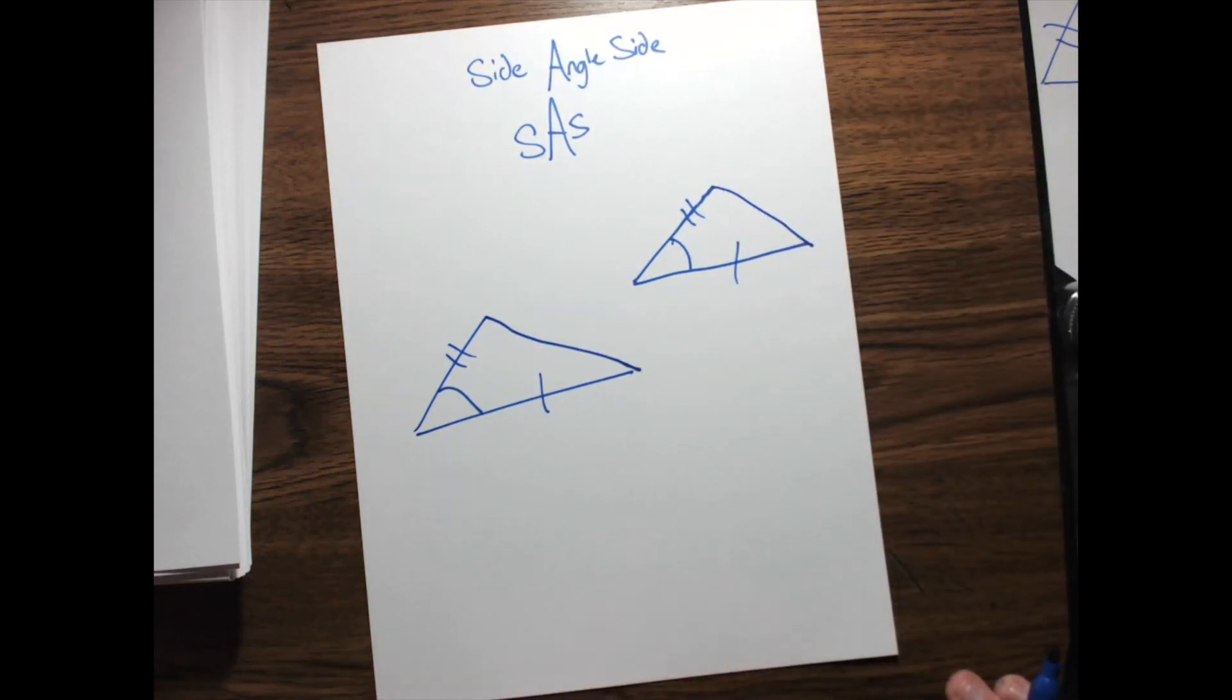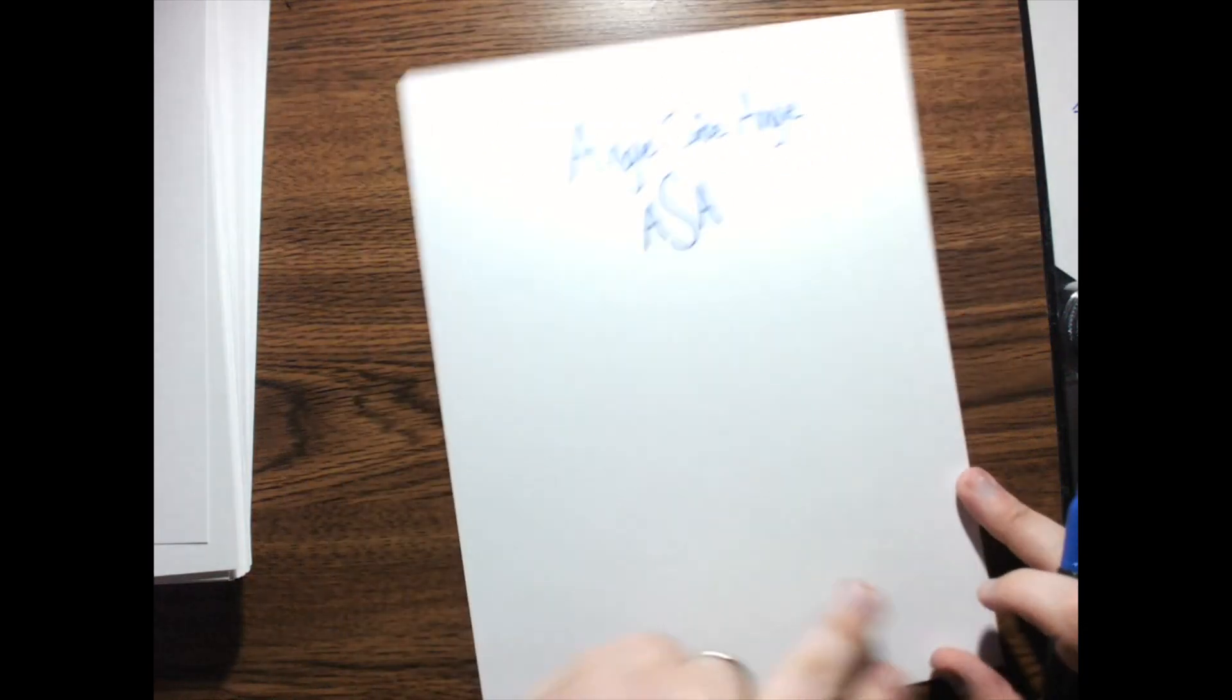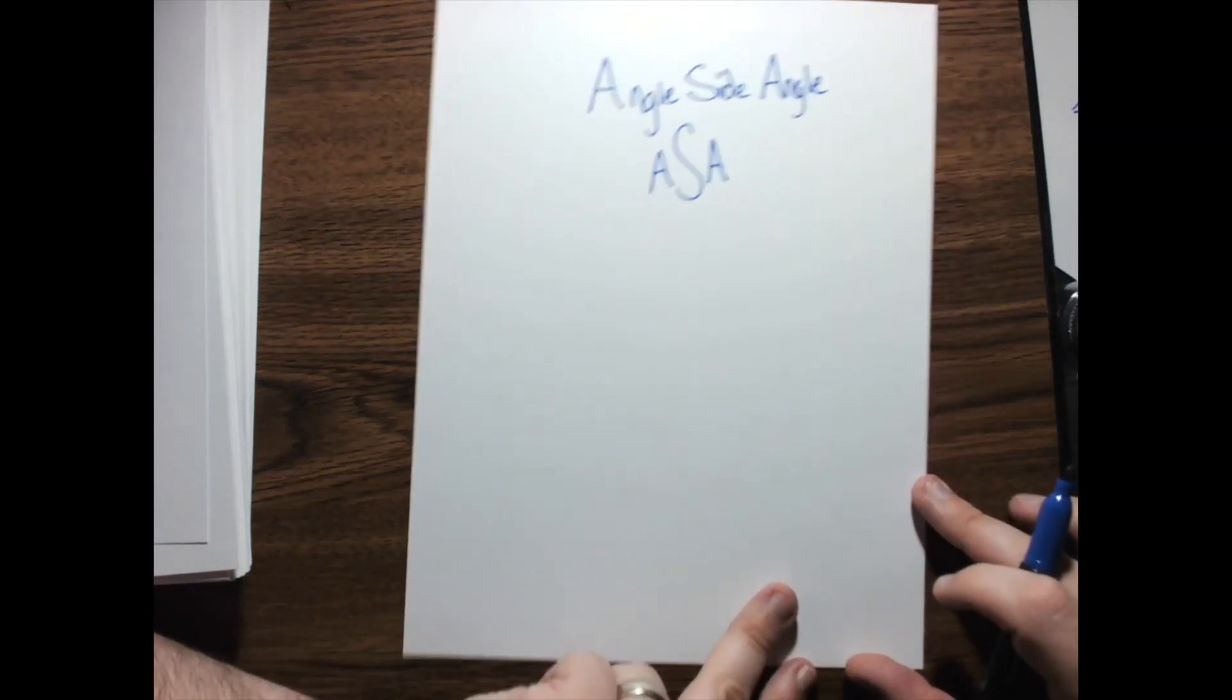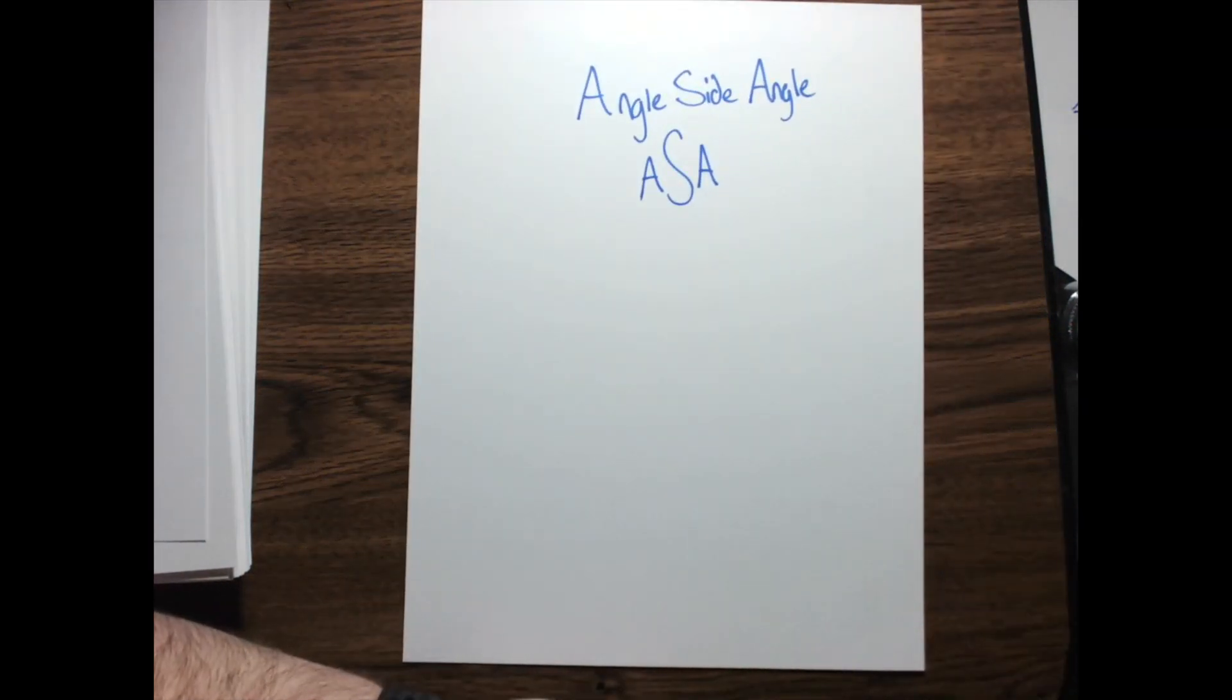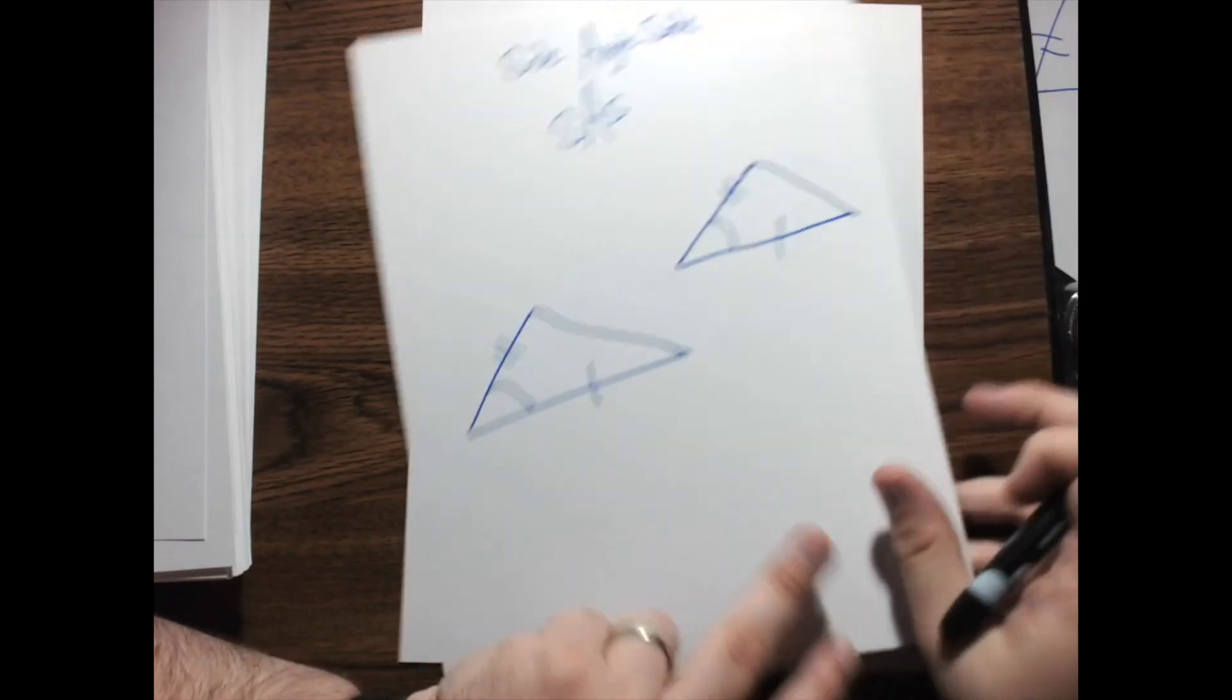So, side, angle, side proves triangles are congruent. Now, let's talk about angle, side, angle. So, with angle, side, angle, side, angle, side had an included angle. By the way, let's talk about included real quick.